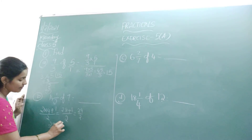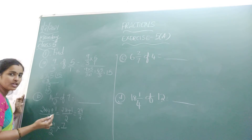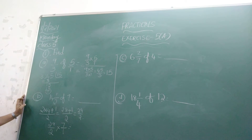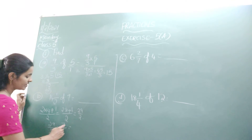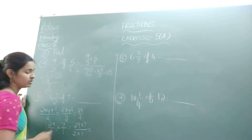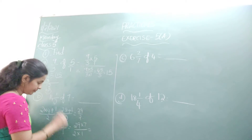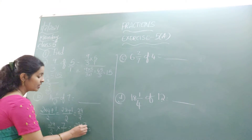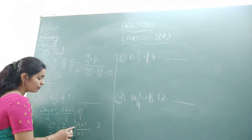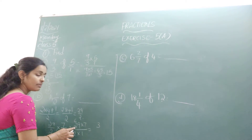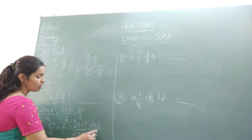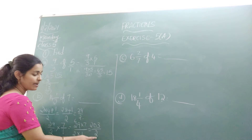Now multiply with 7 — since there is no denominator we write it as 7 by 1. Multiply numerator with numerator and denominator with denominator. So 29 into 7: 7 nines are 63, write 3 carry 6; 7 twos are 14, plus 6 is 20; 2 ones are 2. So we get 203 by 2.